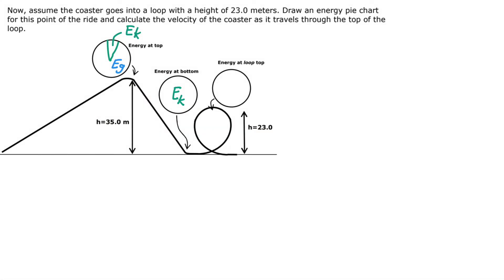Taking inventory of what we know at this point: the velocity at the top, which we called v subscript t, was 1.50 meters per second. We just solved for vb, which is 26.2 meters per second.